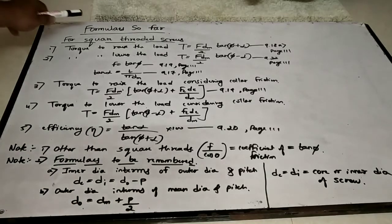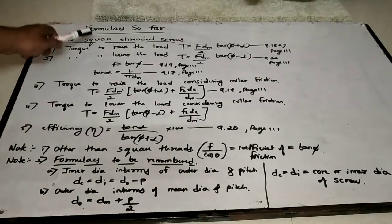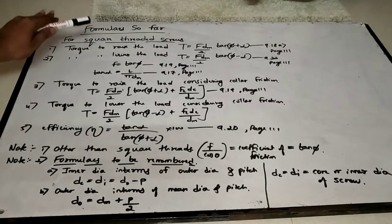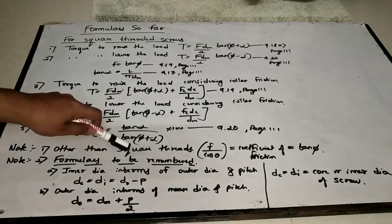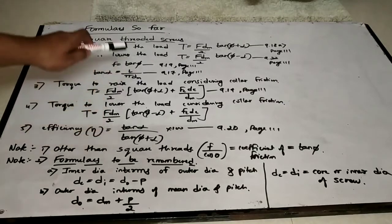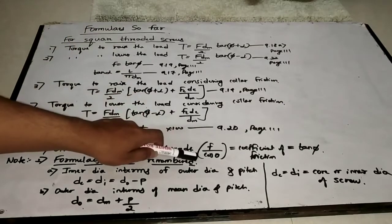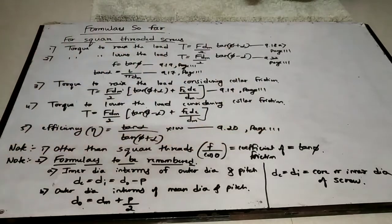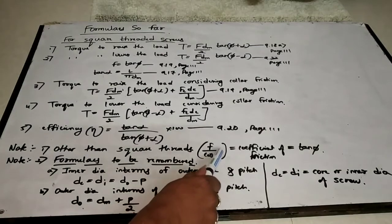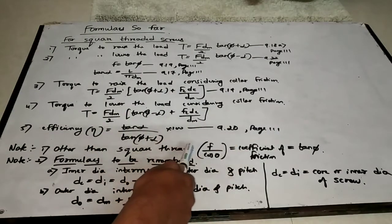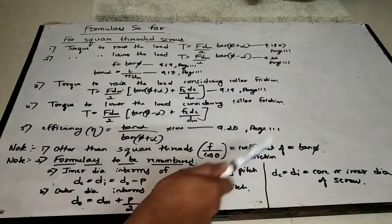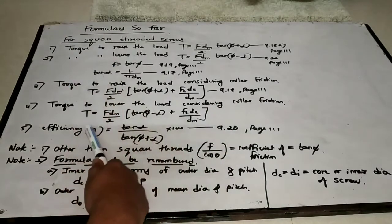To summarize: inner diameter = outer diameter − pitch, and outer diameter = mean diameter + pitch/2. These are the expressions from the previous theory classes that we will now use in the problems. Also remember: for threads other than square threads, f/cos θ = tan φ. For different thread profiles the angle θ varies, as shown in the previous lecture.